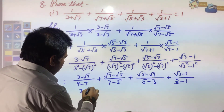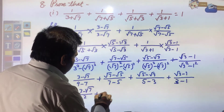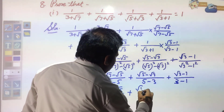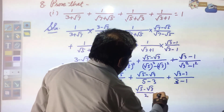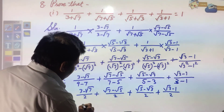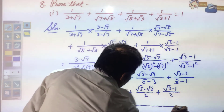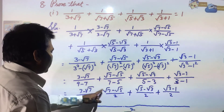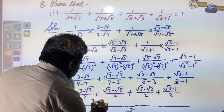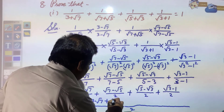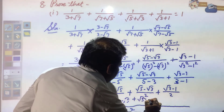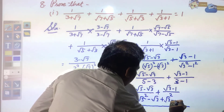So we get: (3 - √7)/2 + (√7 - √5)/2 + (√5 - √3)/2 + (√3 - 1)/2. Taking LCM as 2 and adding all numerators: 3 - √7 + √7 - √5 + √5 - √3 + √3 - 1.